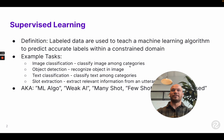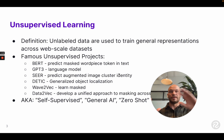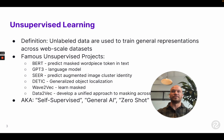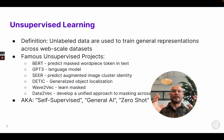Now let's dive into what unsupervised learning is. This is when unlabeled data are used to train general representations across web-scale datasets. These are usually the famous projects when you hear new landmark papers coming out setting state-of-the-art. It's usually a very large compute-intensive training job done on a huge dataset.